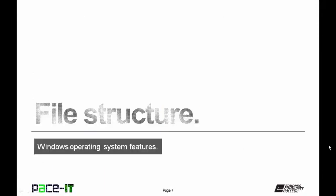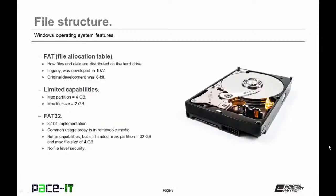Now let's move on to file structure, beginning with FAT — File Allocation Table. It's how files and data are distributed on the hard drive. It's legacy and was developed in 1977; the original deployment was 8-bit. It had limited capabilities: max partition was 4 gigabytes and max file size was 2 gigabytes.